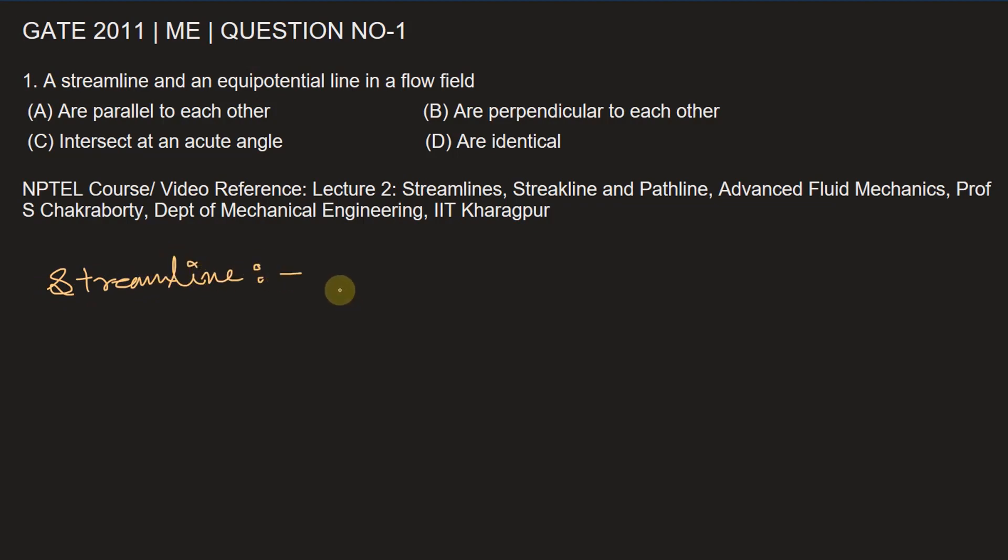A streamline is a line that is tangential to the instantaneous velocity direction. That means, suppose in a flow field, if we take a snapshot at any particular point, the element ds at this point represents the velocity that will be tangential to the flow.